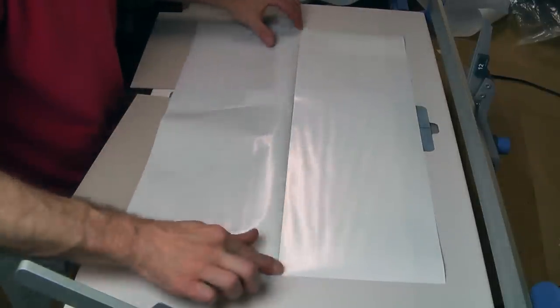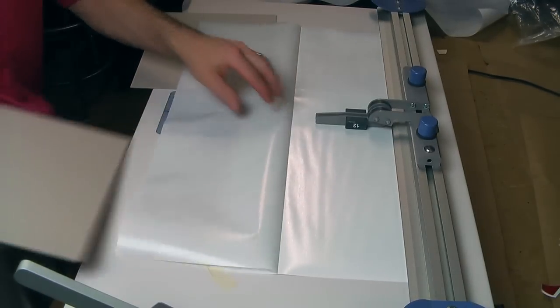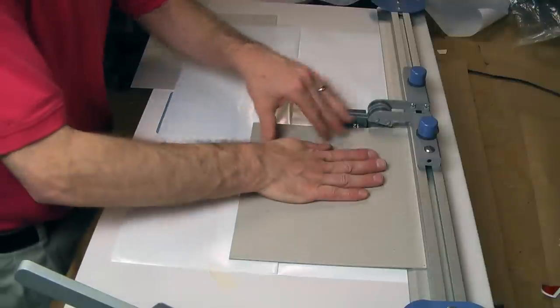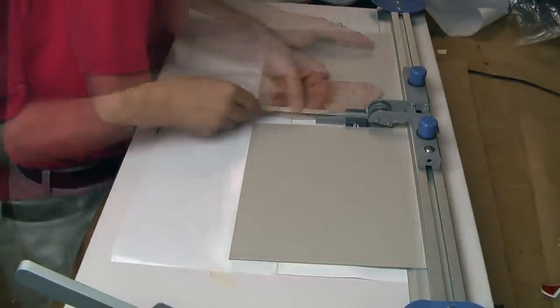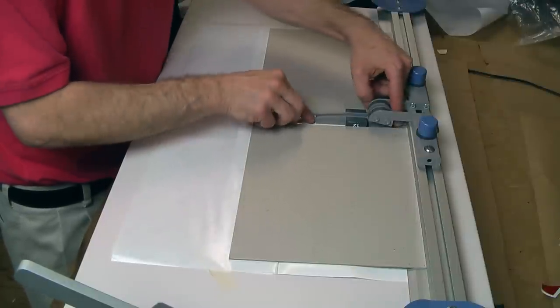Next I align the hardcover boards and spine board with the printed cover using special equipment so they line up evenly. The cover paper has an adhesive on it so it will stick to the cover boards and spine.